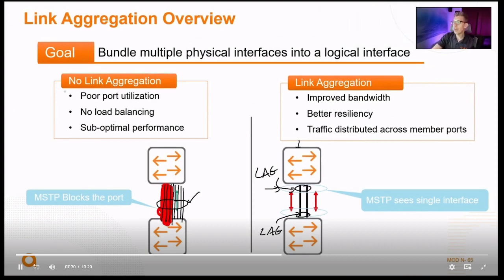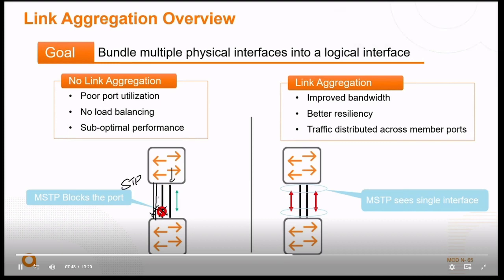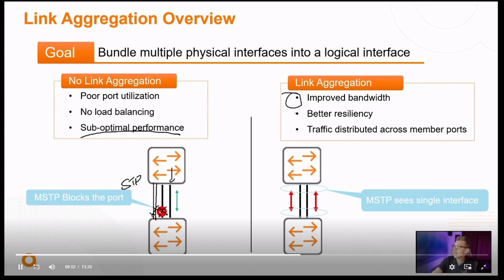Without link aggregation, you have poor port utilization — every redundant link would be disabled, leaving just one primary pathway. Spanning tree would make sure of that. If you added a third link, that would also be disabled; a fourth, disabled. Eight links — seven would be disabled. If seven out of eight roads were shut down for fear of looping, that's not exactly optimal performance — some might call it suboptimal performance.